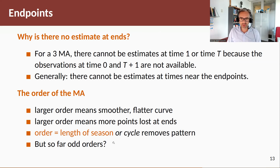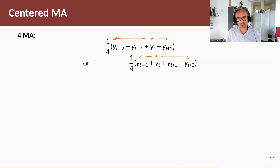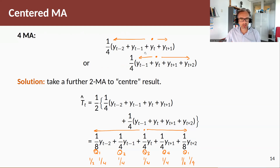But what happens for even orders? If I was to use a four-order MA with monthly or quarterly data, then the trend estimate could contain an average of two values to the left of Yt and one to the right, or one to the left and two to the right — so it's not actually centered. The solution is to take a second moving average, which will have a centering result. Basically, we take these two moving averages and average across those, and the resulting centered moving average is shown by this formula.